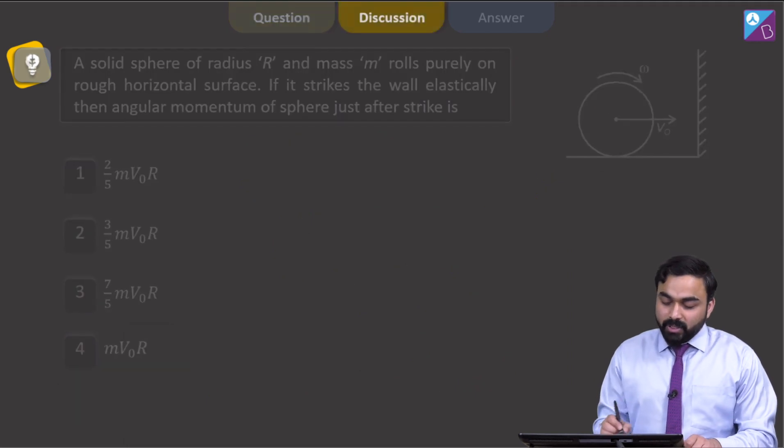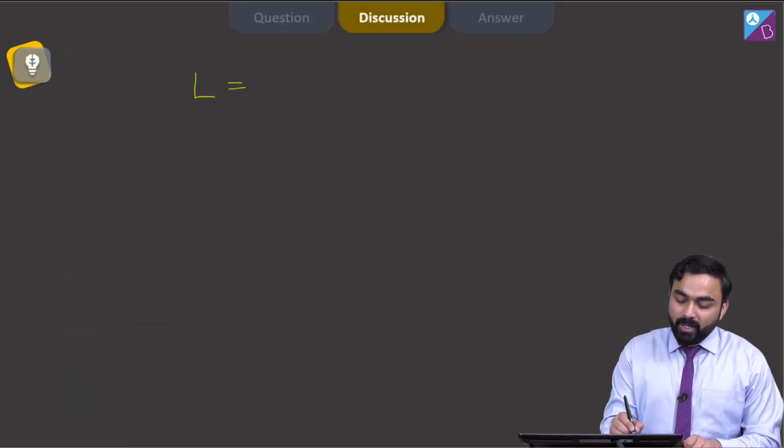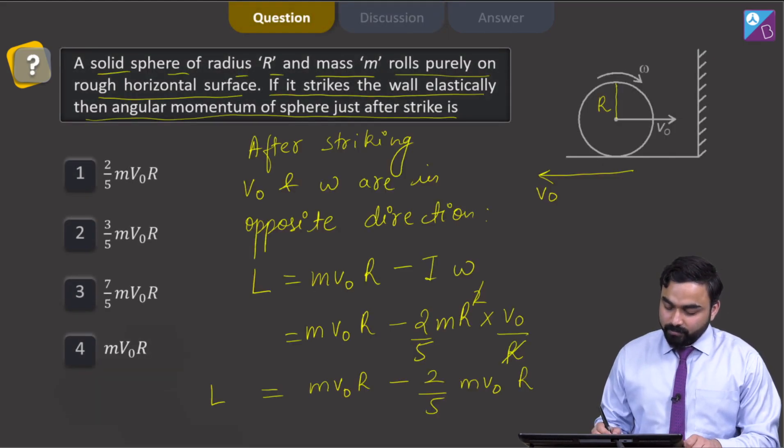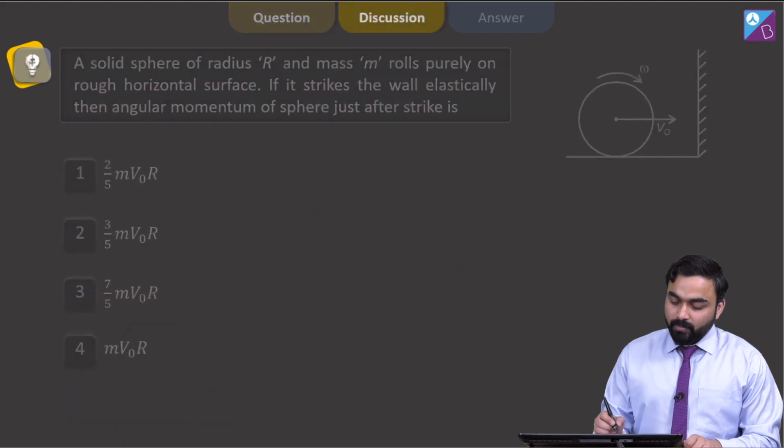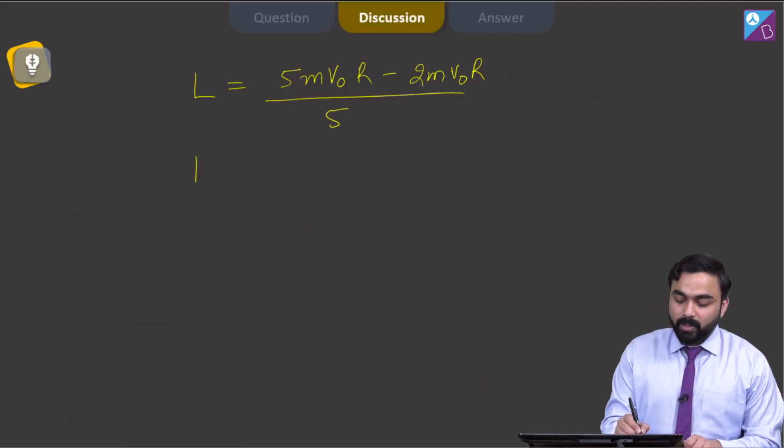So this angular momentum will ultimately come out to be M V 0, 5 M V 0 R minus 2 M V 0 R by 5, which will be 3 by 5 M V 0 R.